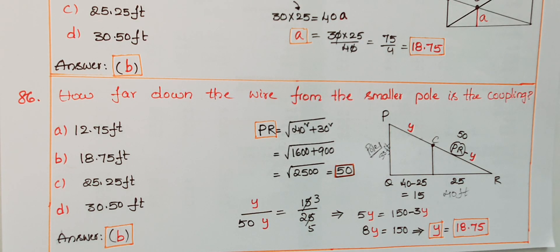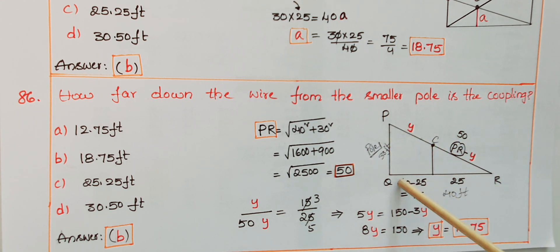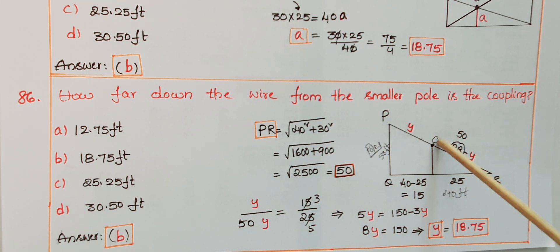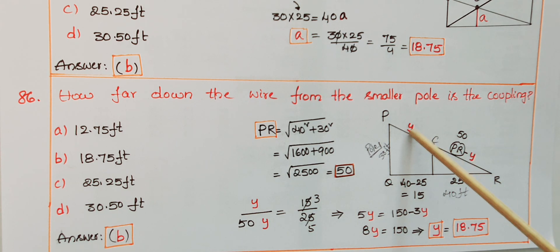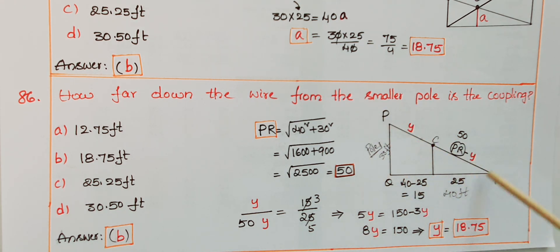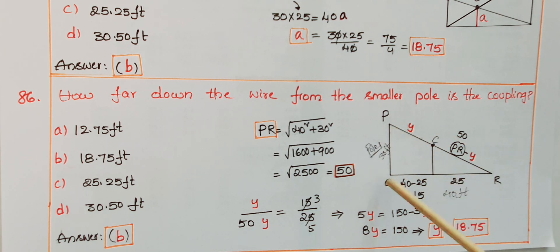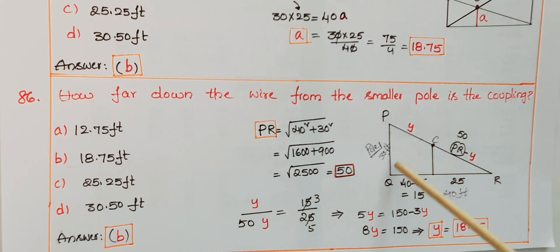The next question is: how far down the wire from the smaller pole is the coupling? Let the smaller pole be at P and the coupling at C. Assume the distance PC = y. The triangle is PQR, where PQ = 30 feet and QR = 40 feet. We need to first find PR.